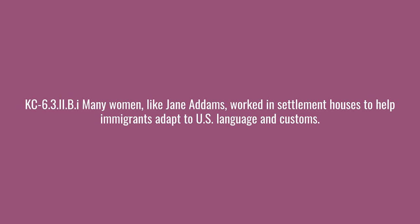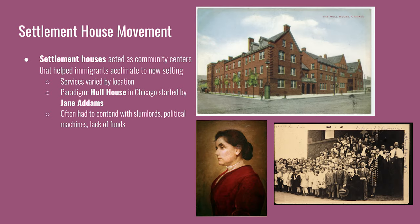Many women, like Jane Addams, worked in settlement houses to help immigrants adapt to U.S. language and customs. Settlement houses acted as community centers, helping immigrants acclimate to the new setting. Jane Addams was a reformer whose settlement house was called Hull House, located in Chicago. Services provided at Hull House and other settlement houses varied by population served — bread lines, meals, help with landlords, and child care for working parents. Jane Addams tells her story in her memoir Twenty Years at Hull House. The field of social work is largely developed as a result of the work that settlement houses did in this period.